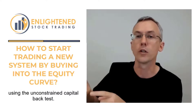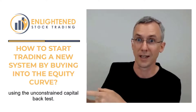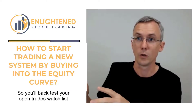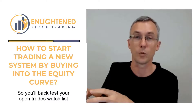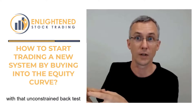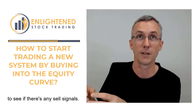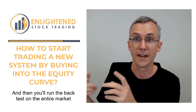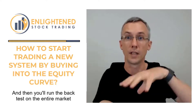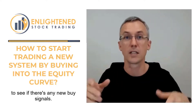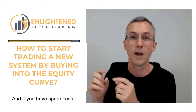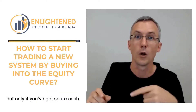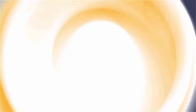You manage them ongoing using the unconstrained capital backtest. You backtest your open trades watchlist with that unconstrained backtest to see if there's any sell signals. And then you run the backtest on the entire market to see if there's any new buy signals. If you have spare cash, you can take a new buy signal, but only if you've got spare cash.